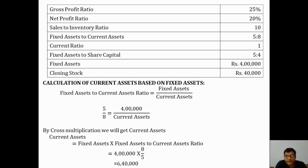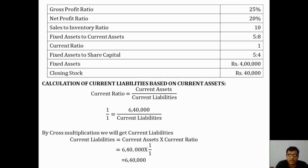Now with current assets known, we calculate current liabilities using the current ratio. The current ratio is 1:1, so 1/1 equals 6,40,000 divided by current liabilities. By cross multiplication, current liabilities equal current assets into the current ratio, that is 6,40,000 into 1/1 = 6,40,000. Since the ratio is 1:1, current liabilities equal current assets, both being 6,40,000.